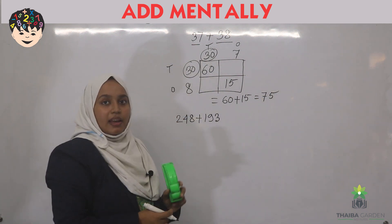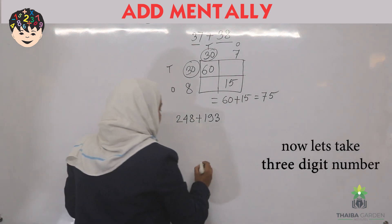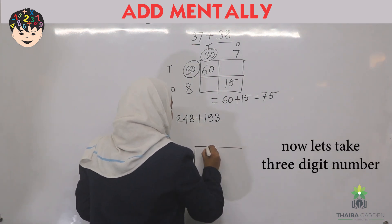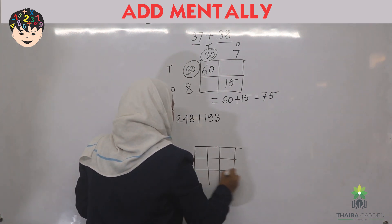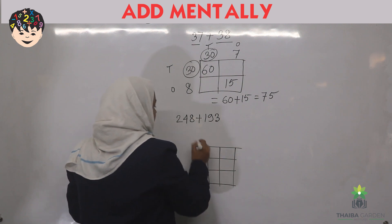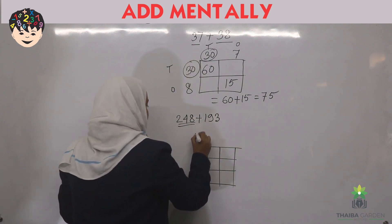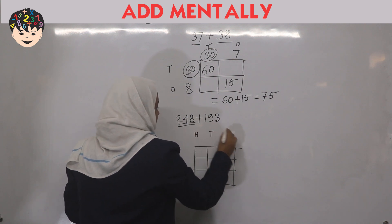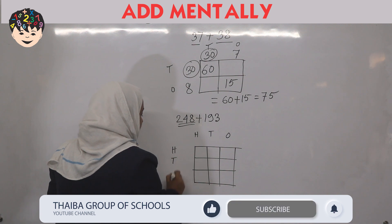Next let us take another example which is three-digit number. So for this we need a box like this. So this is three-digit number. So this is in hundred's place, ten's place and one's place. Here also hundreds, tens and ones.